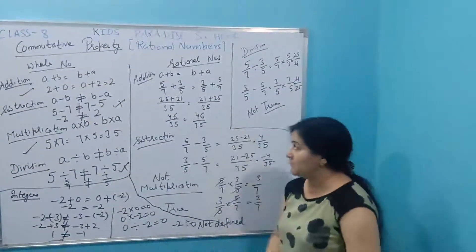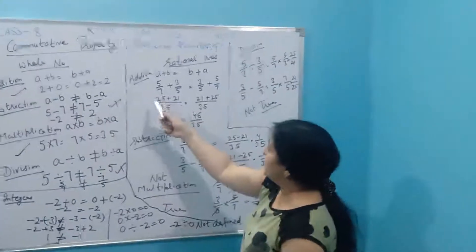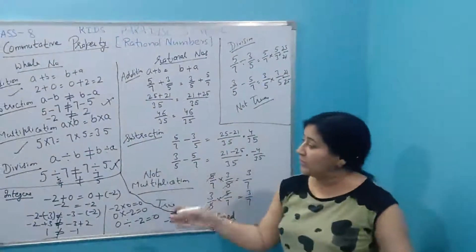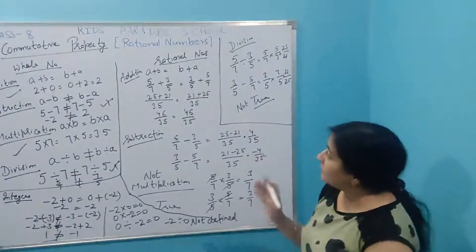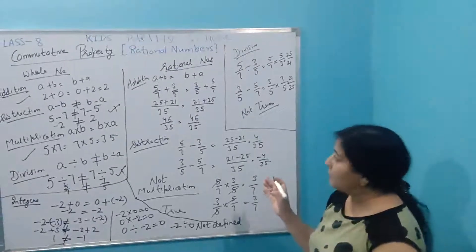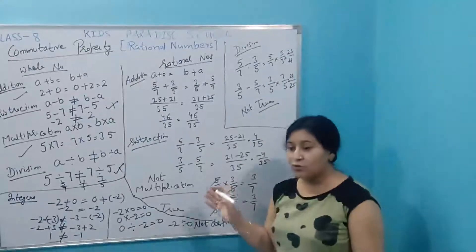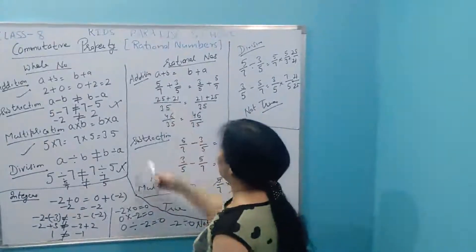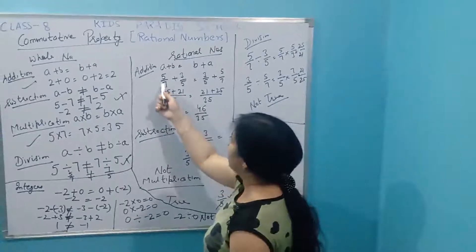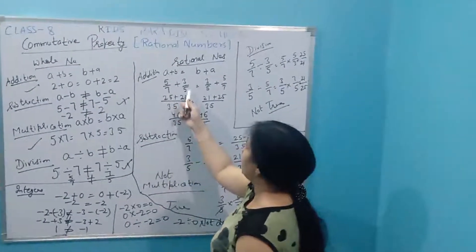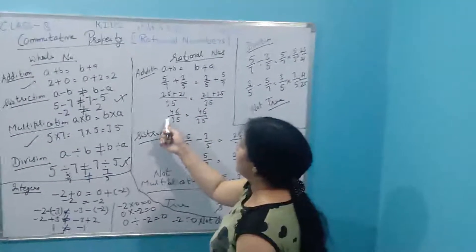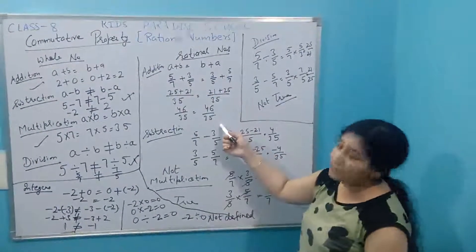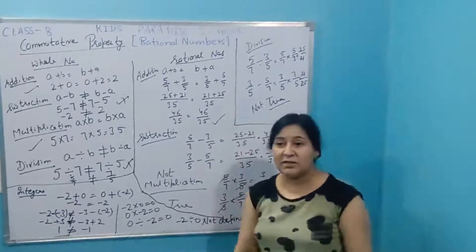Now let's talk about rational numbers. I have two rational numbers: 5 by 7 and 3 by 5. In addition: 5 by 7 plus 3 by 5. The LCM of 7 and 5 is 35; 35 divided by 7 is 5, so 5 times 5 is 25; 35 divided by 5 is 7, so 7 times 3 is 21; giving 46 by 35. If I change the order, I get back to the same number, so commutative property under addition for rational numbers is true.